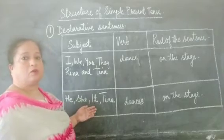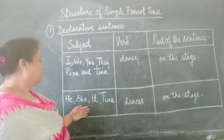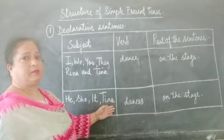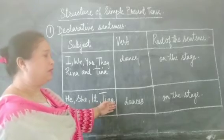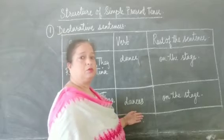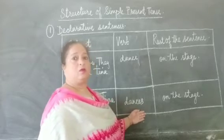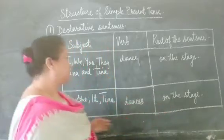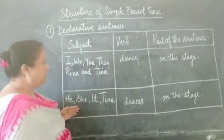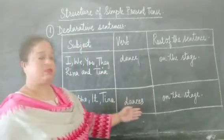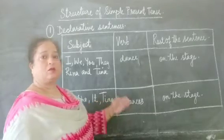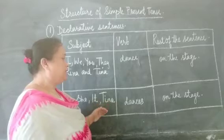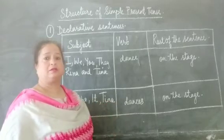But if the subject is he, she, it, or anyone's singular name — for example Tina — the verb always has an S added to it. For example: 'He dances on the stage,' 'She dances on the stage,' 'It dances on the stage,' 'Tina dances on the stage.'